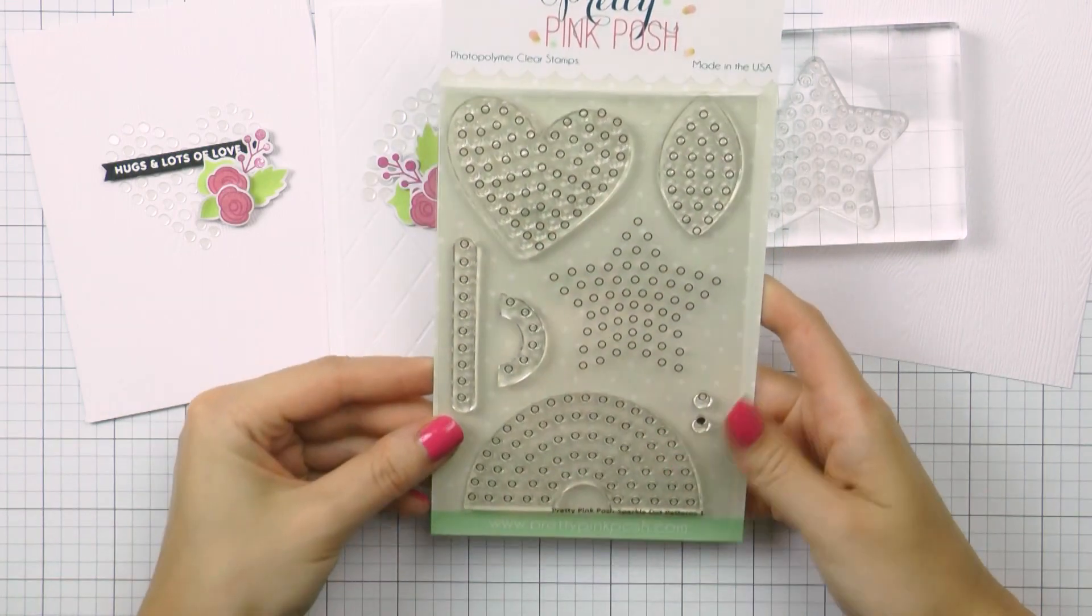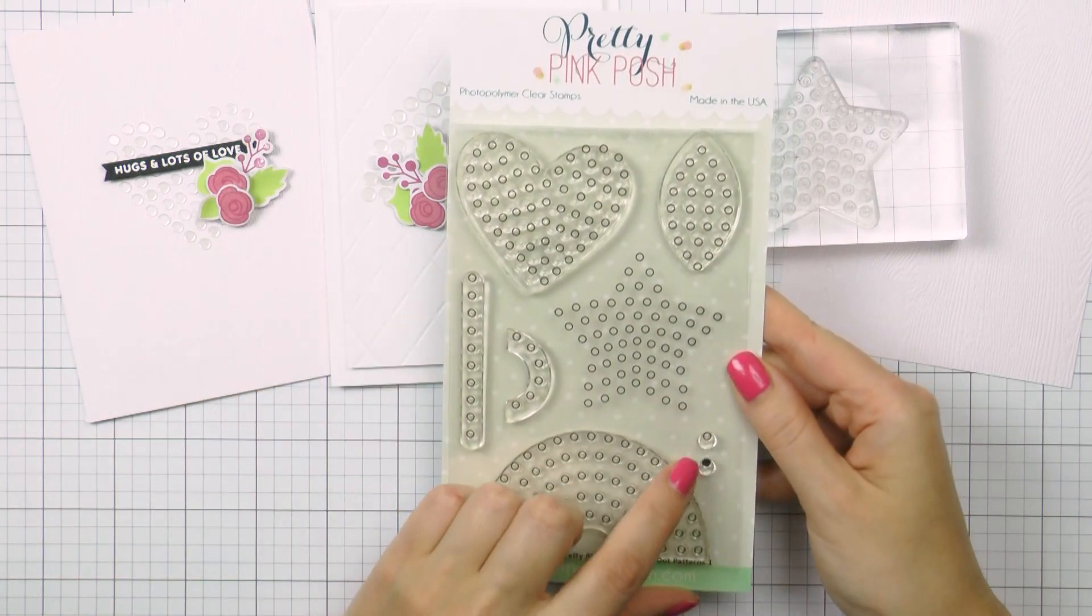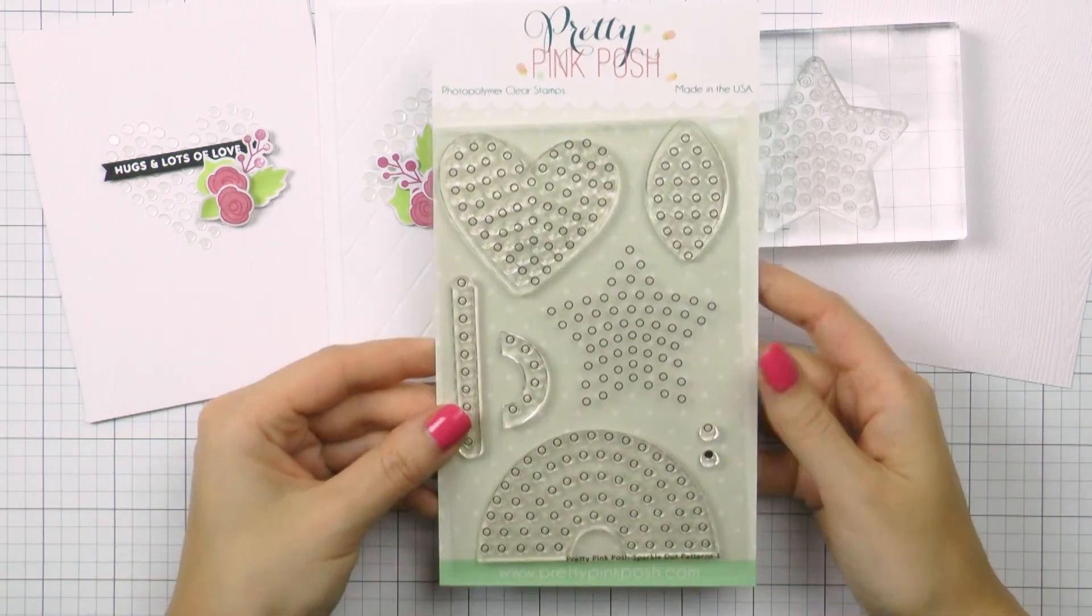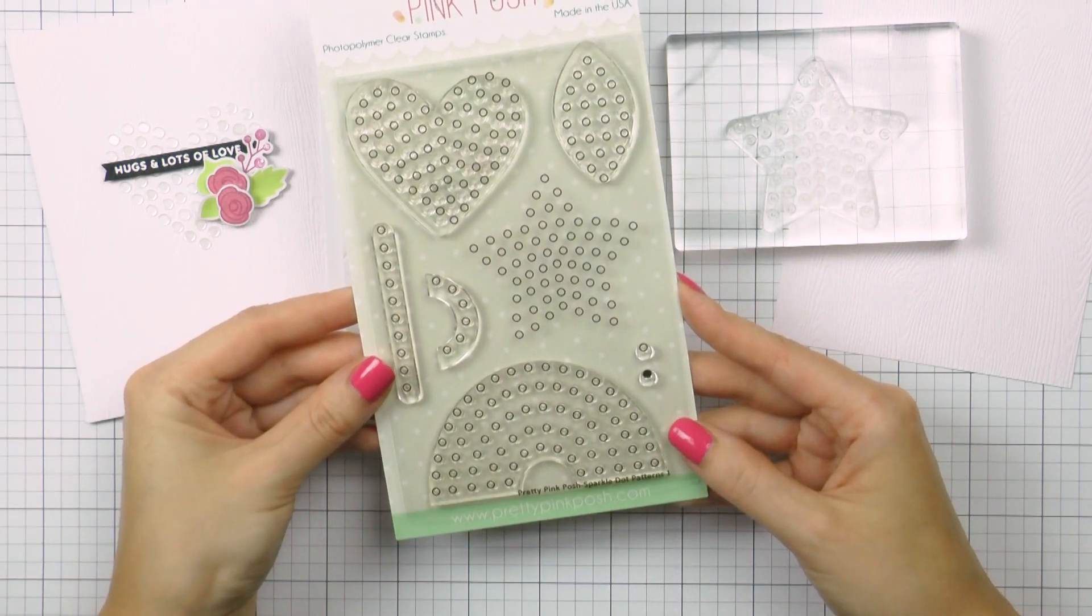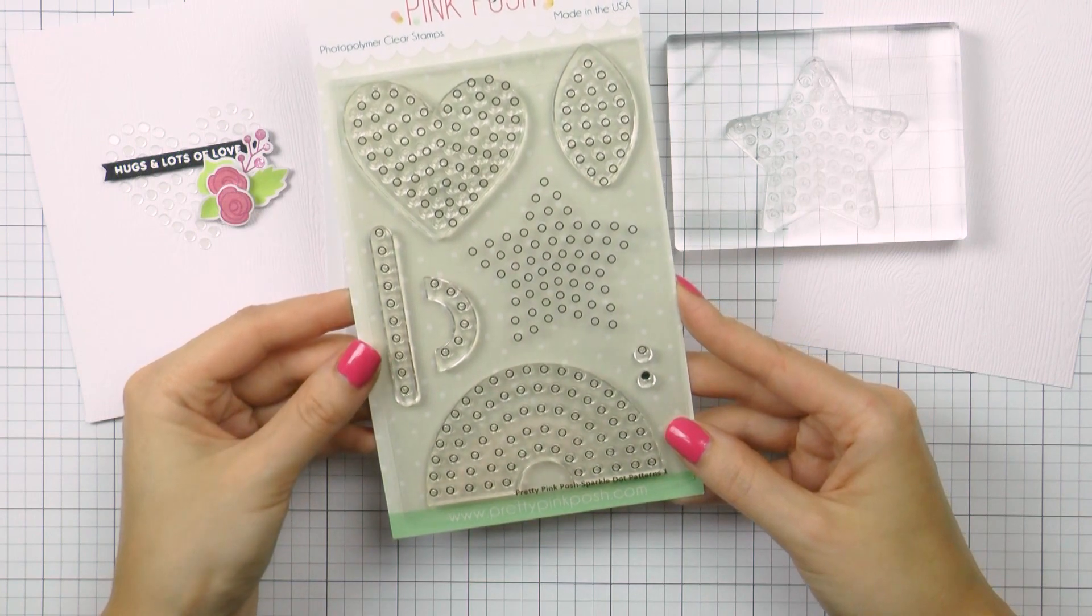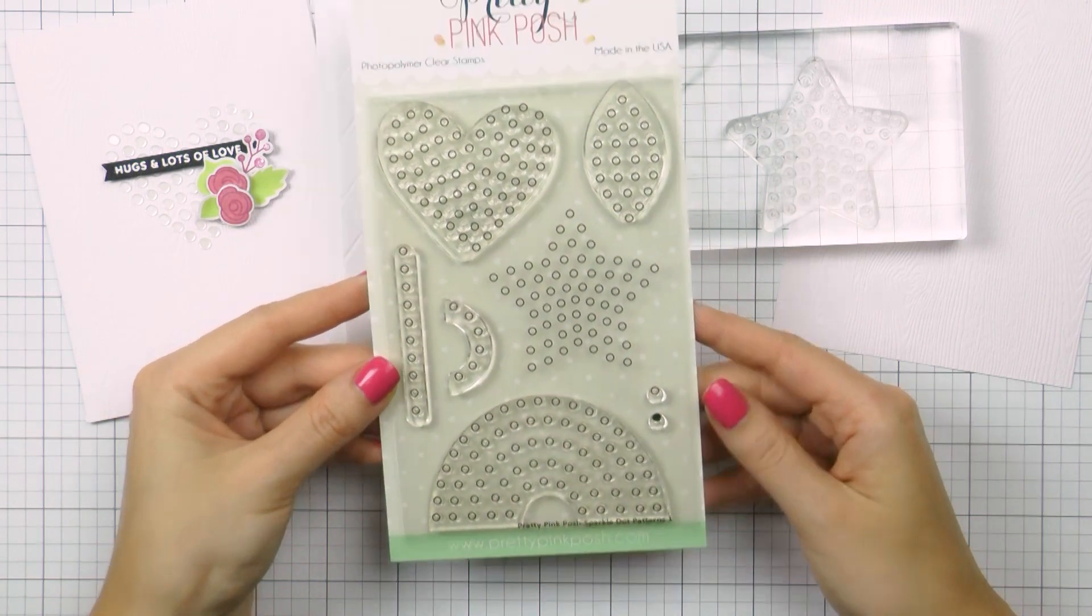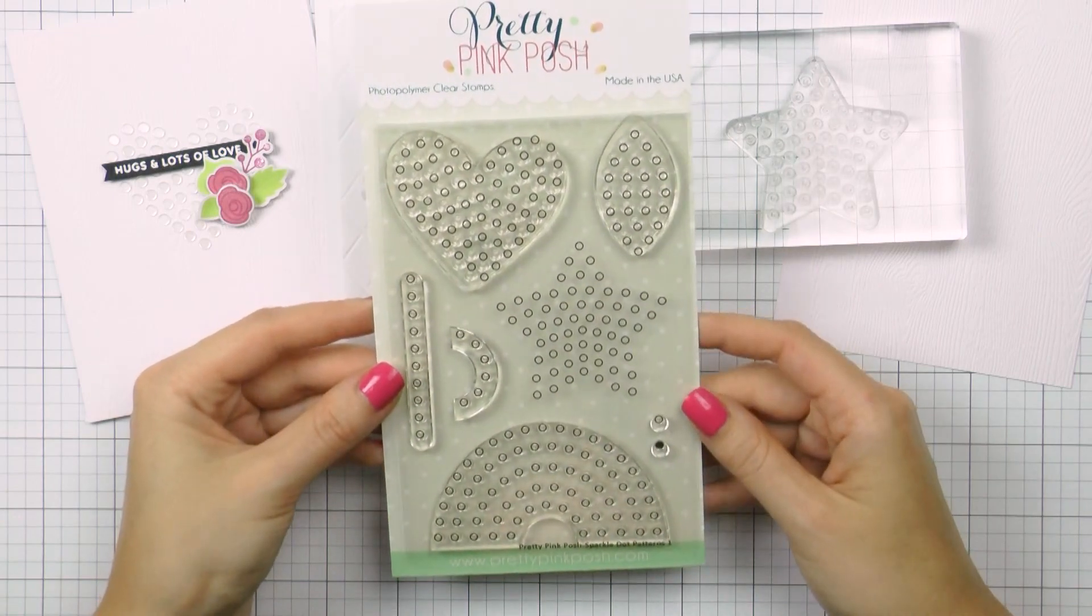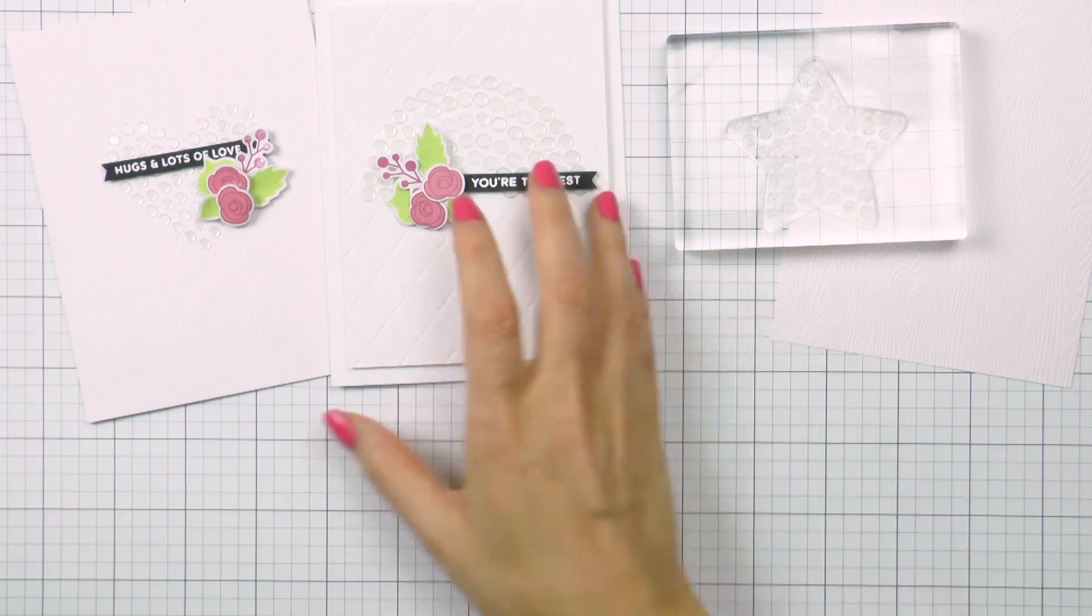There are also other shapes in this stamp set, there is a leaf or a petal, you also have a straight line, a mini semi circle and also an individual dot outline as well as a dot stamp in case you want to add color to any of the stamp dots on your project. So it's a unique stamp set and if you like working with embellishments with little embellishments like sequins and similar, I think it's a must have stamp set for your stash.